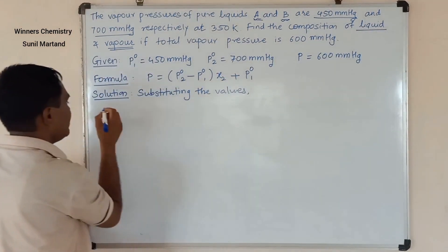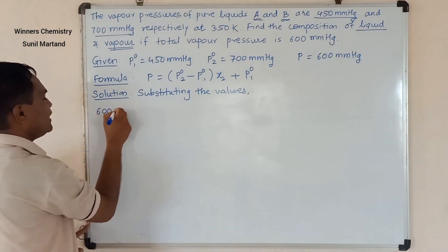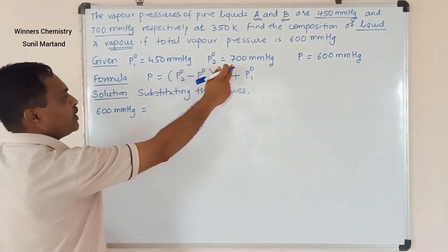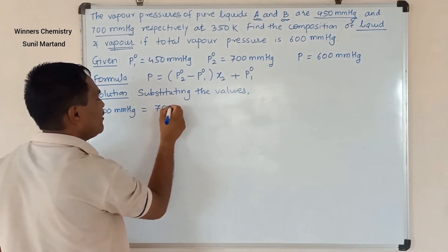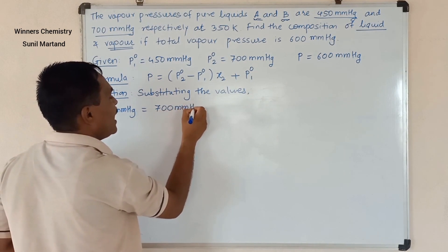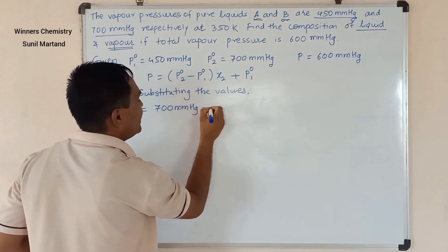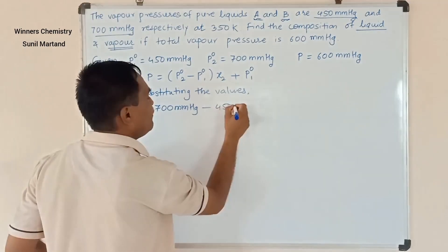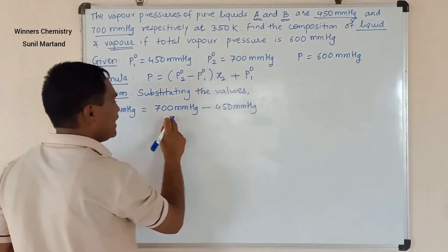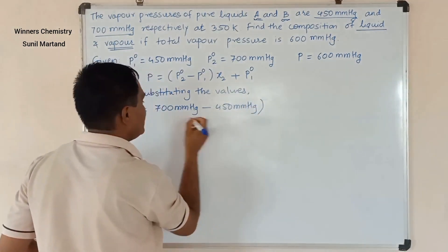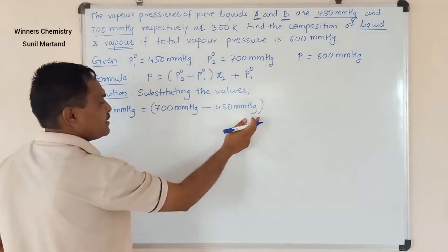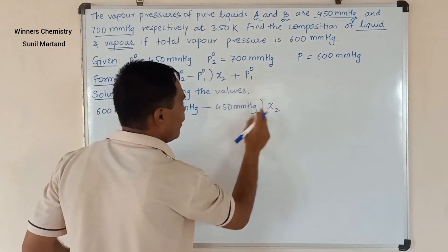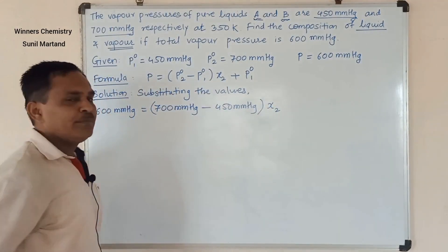Substituting the values into the formula: 600 mmHg equals 700 mmHg minus 450 mmHg, multiplied by x2, plus 450 mmHg. We need to calculate x2.